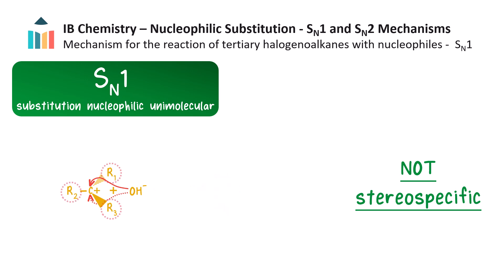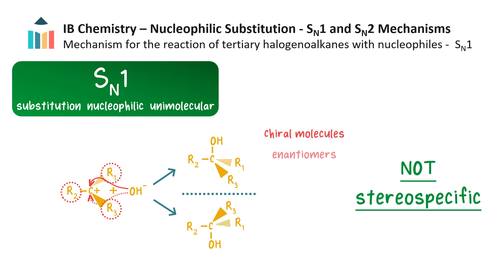However, if the three R groups are all different, the organic product which forms has two possible configurations in space. Since each molecule is chiral with four different groups around the carbon atom, and since these two molecules are non-superimposable mirror images of each other, they are enantiomers. The product mixture contains a 50-50 ratio of these enantiomers and is therefore referred to as a racemate or a racemic mixture. Again, SN1 reactions are not stereospecific, even when all three R groups are different.